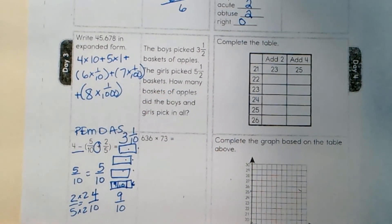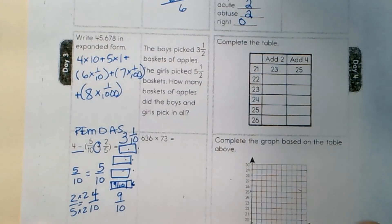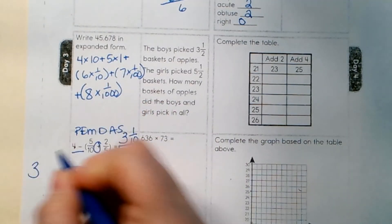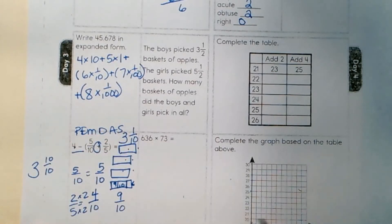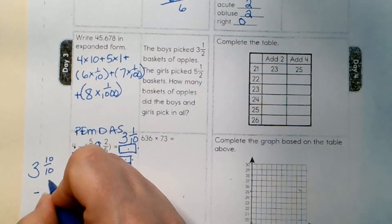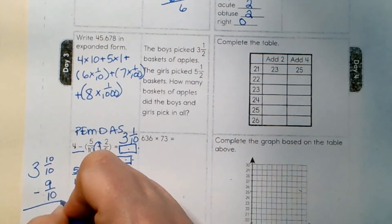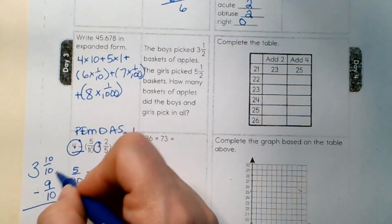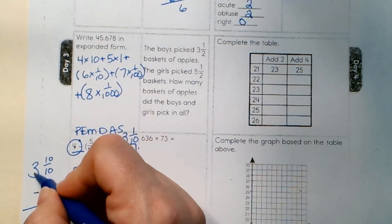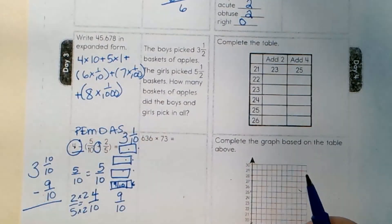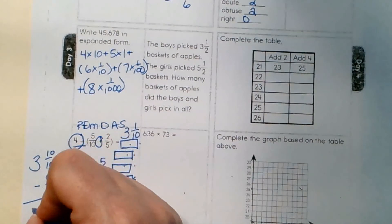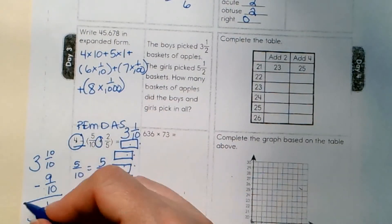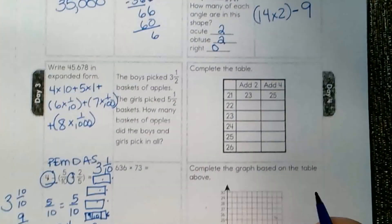If we didn't want to draw a picture, we would have had to have borrowed from the whole. We would have had 3 and 10 tenths subtracting 9 tenths. Remember, you have a whole number. You borrow another whole, 10 tenths, and you take one from here. You're just making it look different. Then we would still have 3 and 1 tenth. So, either way, a picture or working it out.